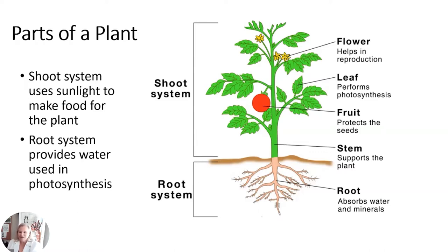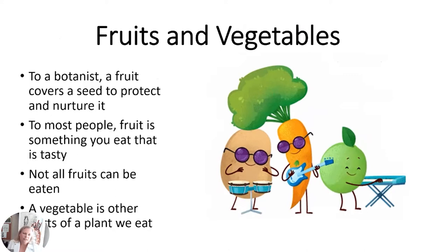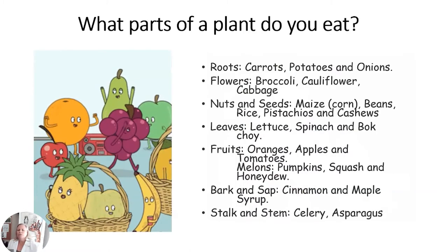The flowers help in reproduction — they make seeds and fruit. To a botanist, a scientist who studies plants, fruit covers a seed and protects it until it's ready to be planted and grown. But to most people, fruit is just something tasty we eat, usually pretty sweet. Not all fruits can be eaten. A vegetable is just another part of the plant we eat and is usually not as sweet. Anything with a seed is technically a fruit to a botanist.